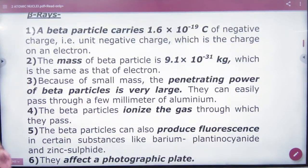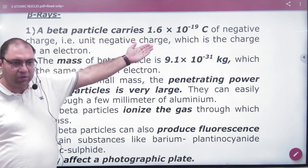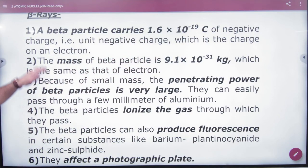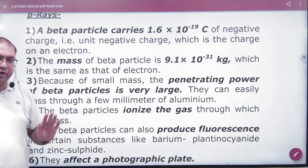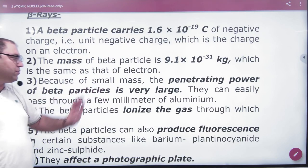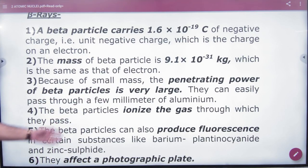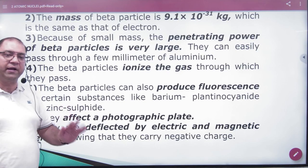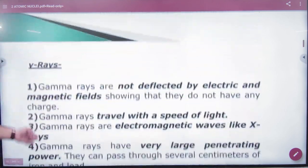Beta rays are negatively charged electrons with charge 1.6×10⁻¹⁹ and mass 9.1×10⁻³¹. Because electrons are much smaller than protons, the penetration power is large. Beta particles ionize gas, show fluorescence, affect photographic plates, and are deflected by electric and magnetic fields.